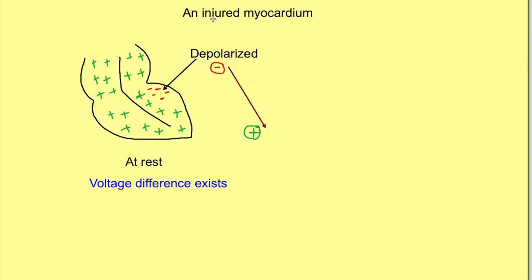So with this concept, let's proceed to current of injury. In an injured myocardium — for example, where the left ventricular base is injured — the injured area becomes more permeable to ions and hence remains in a depolarized state. So even at rest, there exists a potential difference between different sides in the ventricle, and the direction of that potential difference is from negative to positive.